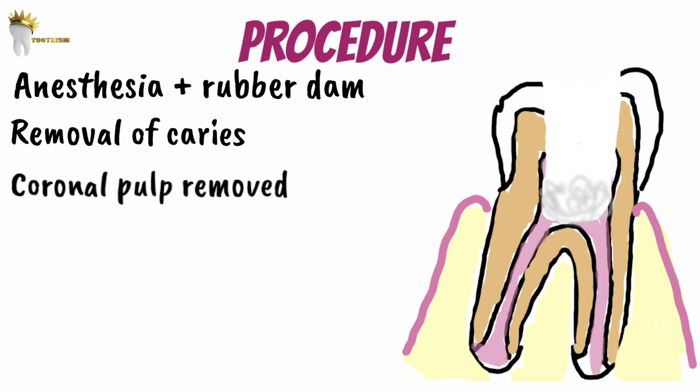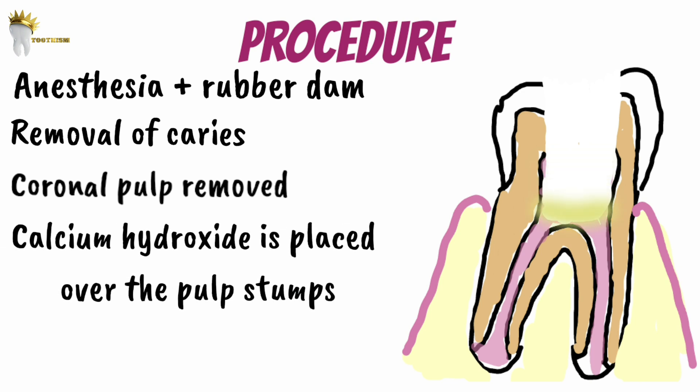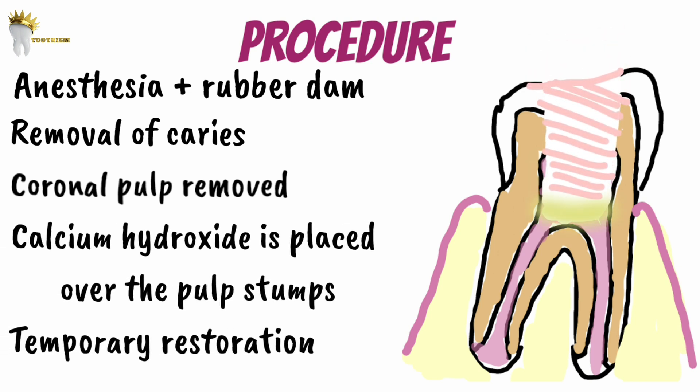Following the pulp tissue removal, rinsing of the residual debris and controlling the hemorrhage is done. This is done by placing a sterile moist cotton pellet over the pulp. Then a calcium hydroxide mixture is placed over the amputated pulp, followed by a temporary filling material on top. One can also place glass ionomer cement for a better seal.